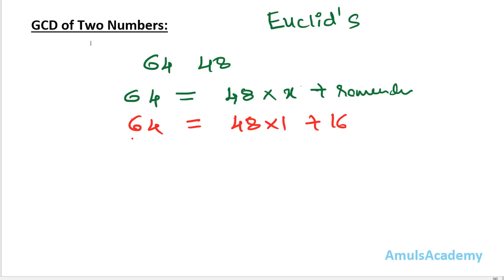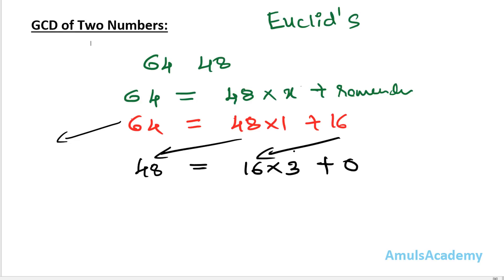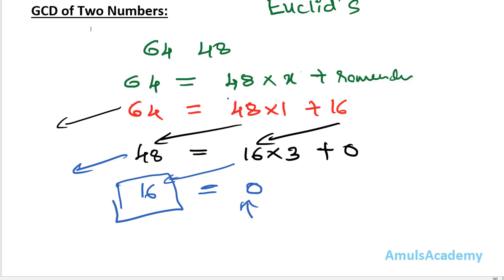Now we shift the values: the 64 is dropped, 48 moves to the left, and the remainder 16 moves in. We then compute 48 = 16 × 3 + 0. The remainder is 0. Again the values shift: 48 is dropped, 16 moves left, and 0 moves in. When the remainder becomes 0, the current divisor is the GCD. So 16 is the GCD of 64 and 48.